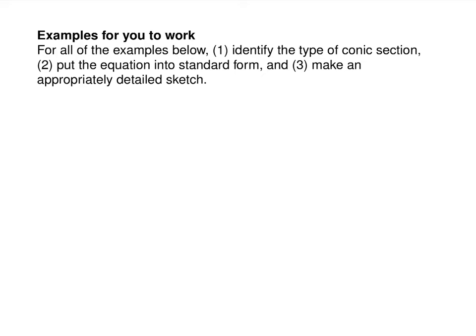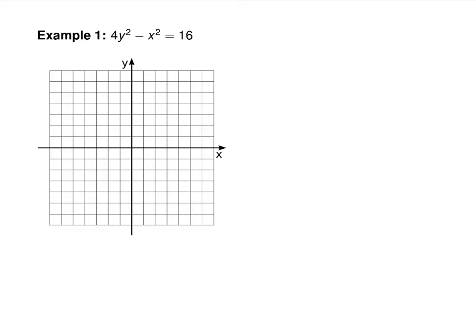For the practice examples, first identify the type of conic section, put the equation into standard form, then make an appropriately detailed sketch. Once you have both x² and y² present, you have either a hyperbola or an ellipse. If the squared terms are added, it's an ellipse; if they're subtracted, it's a hyperbola. Because the y² is the positive term here, this hyperbola opens up-down.